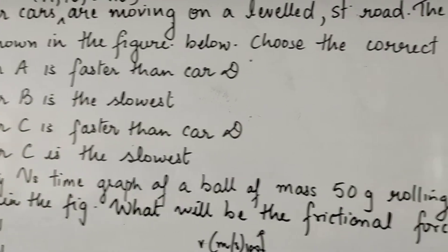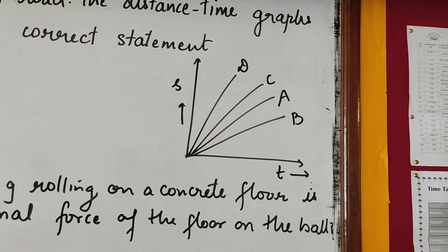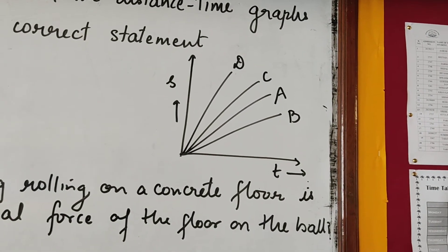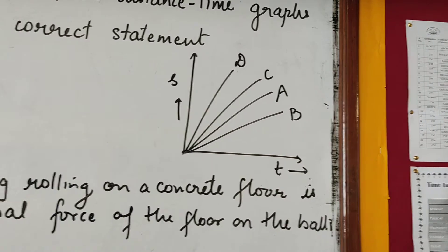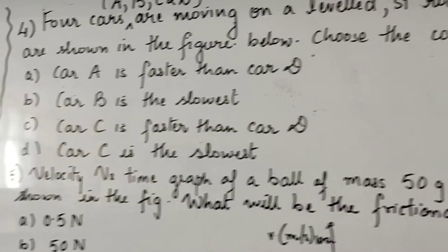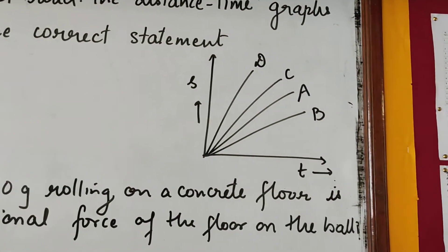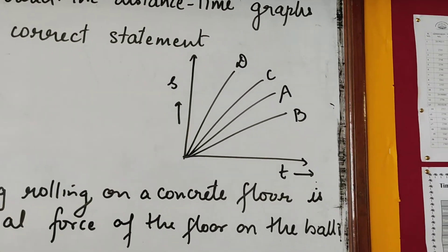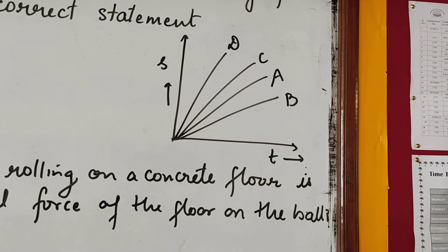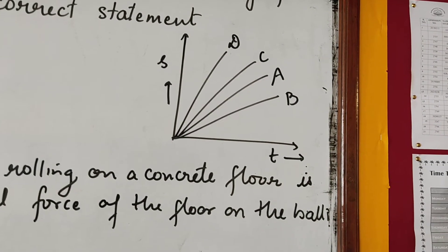So now let us have a look at the option. What is first? Car A is faster than car D. Car A is faster than car D. No, car A has smaller slope. Its slope is less than D. So first option is wrong. Car B is the slowest. Car B is the slowest. Yes.